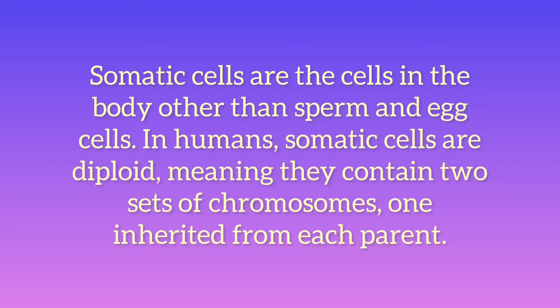For example, in mammals, somatic cells make up all the internal organs, skin, bones, blood, and connective tissue, while mammalian germ cells give rise to spermatozoa and ova which fuse during fertilization to produce a cell called a zygote, which divides and differentiates into the cells of an embryo. There are approximately 220 types of somatic cell in the human body.